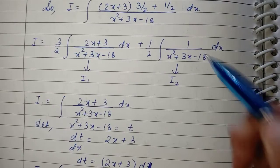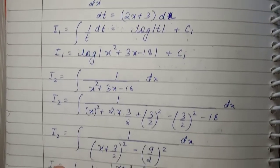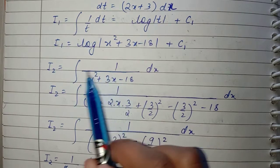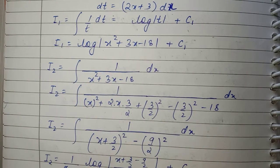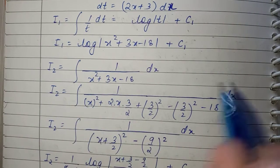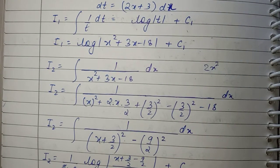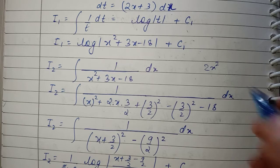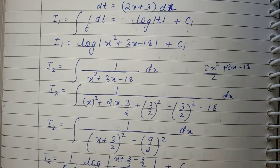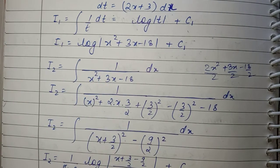Now we solve I2. We need to change x²+3x-18 into the form x² ± a². The first step is to convert it to a perfect square of the form (a+b)² = a² + 2ab + b².